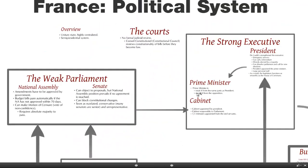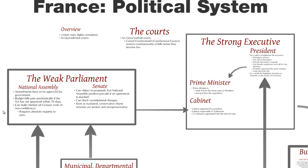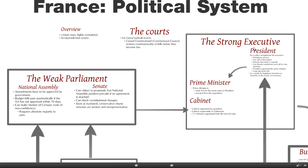Moving on to the relationship between parliament and executive. In the American system, the strong checks and balances means that these different bodies are effectively equally strong. Not so in France. Here the system looks much more like the United Kingdom, with a weaker parliament and a stronger executive. The National Assembly is the lower house of this bicameral parliament with the Senate being the upper house. The Senate, however, is effectively much weaker than the National Assembly.